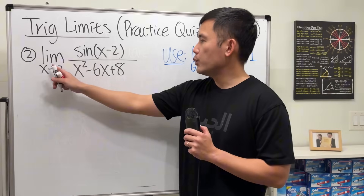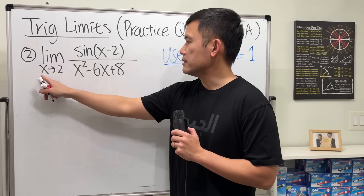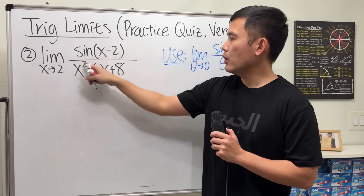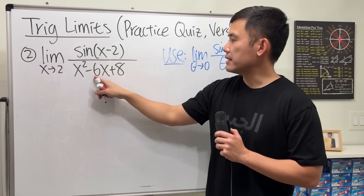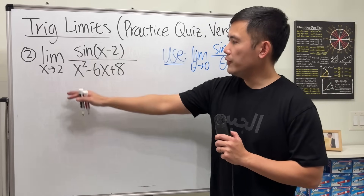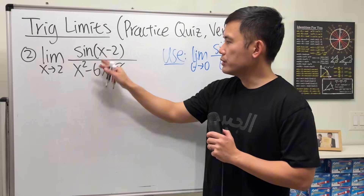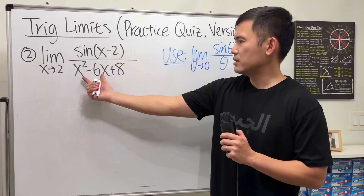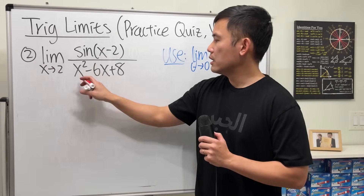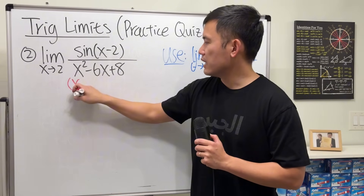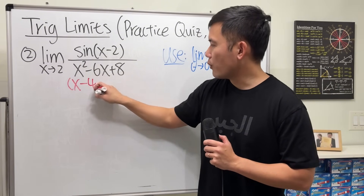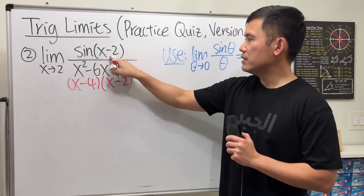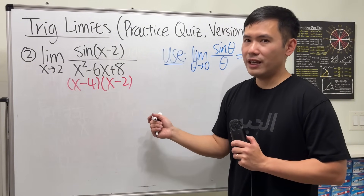Now for number two. We have the limit as x going to 2 of sine of (x minus 2) over x squared minus 6x plus 8. If you plug in 2, it's 0 over 0. You might notice the denominator can be factored — it becomes (x minus 4)(x minus 2). This and that match, which is very nice.